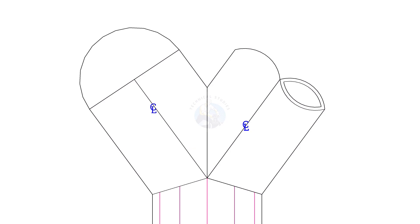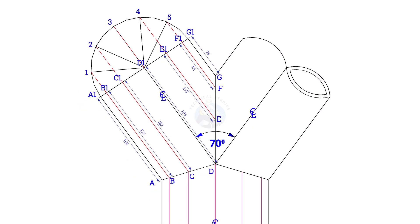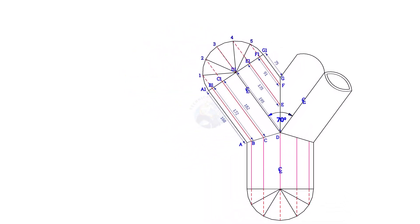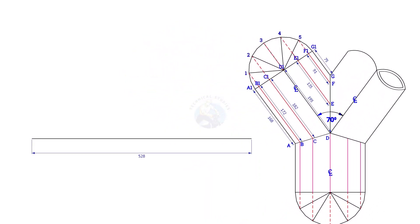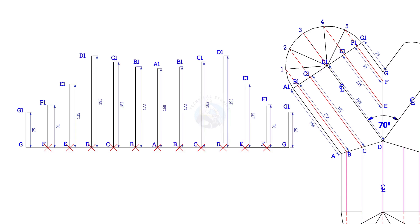To lay out the true length of the branches, the process is the same. Draw a half circle and divide it into 6 parts. Draw perpendicular lines as shown, and note down the lengths. Draw the pipe circumference line, divide it into 12 equal parts, and draw vertical lines G to G1, F, F1, etc., and draw a curve as in the previous layout.